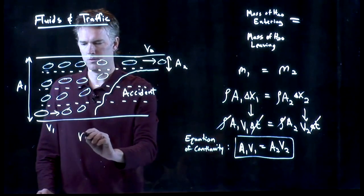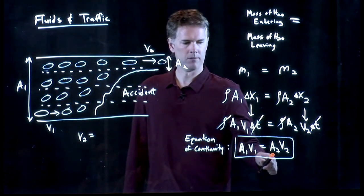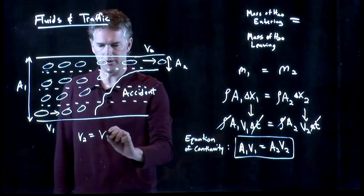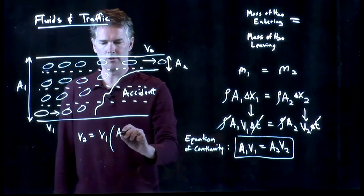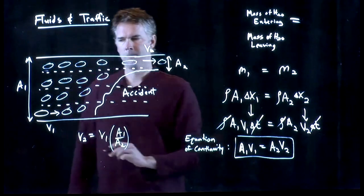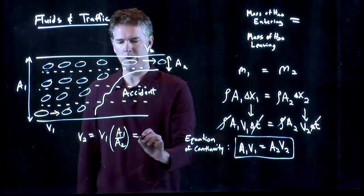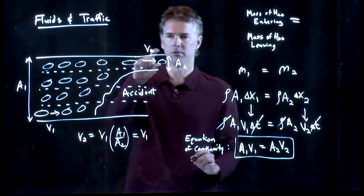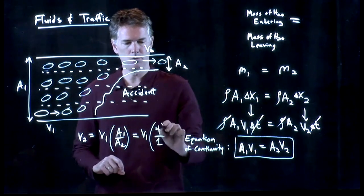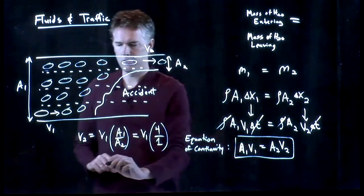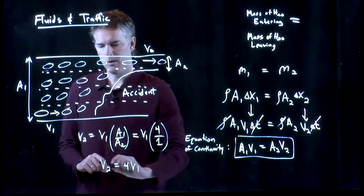And V2 is now given by this equation right here. What is it? It's just V1 times A1 over A2. So if this was four lanes, then A1 would be four. If this was one lane, then A2 would be one.